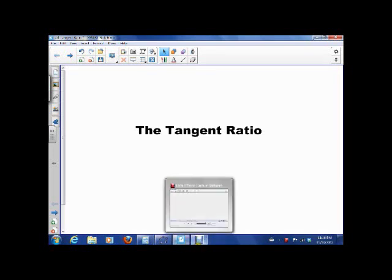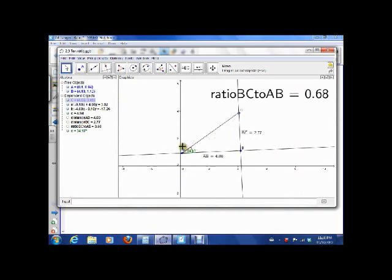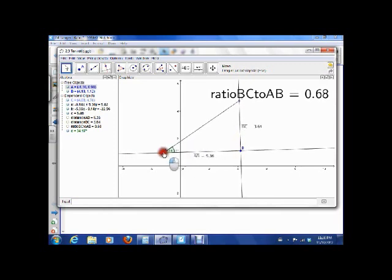Hi there, today we're going to do some practice using the tangent ratio. Remember, the tangent ratio of angle A is the ratio of the opposite side BC to the adjacent side AB. Notice if I keep the angle the same and change the sides, that ratio stays the same. As soon as I change the angle, the ratio changes, but keeping the angle the same keeps the ratio the same.